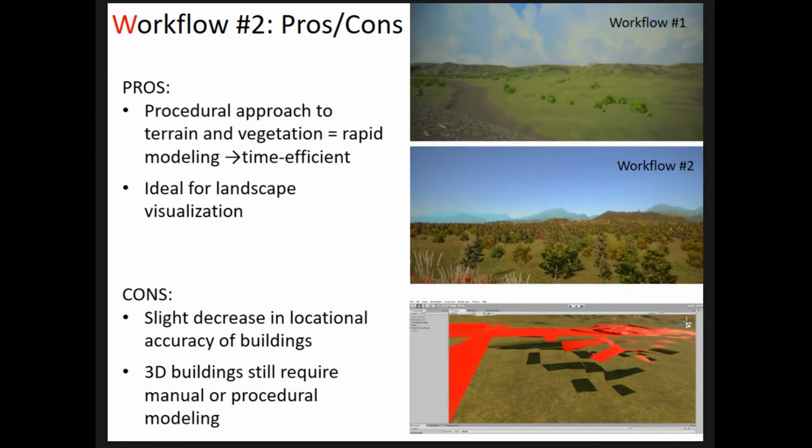Depending on the purposes of your model and what you're trying to do, there can be a decrease in structural location accuracy, and the terrain model detail is reduced compared to workflow 1. So it's more efficient but potentially less accurate. This is due to the constraints of having to use anchor points in the shapefile and then stretching it out within Unity.